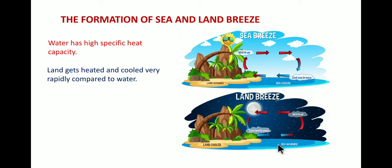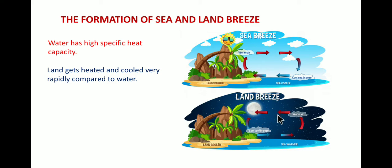At night the hot air above the sea rises up, and the cold air from land replaces the hot air. The cool air from land goes towards the sea and this is called the land breeze. So sea breeze occurs during the daytime and land breeze during the night time. These breezes make the climate moderate near the seashore.